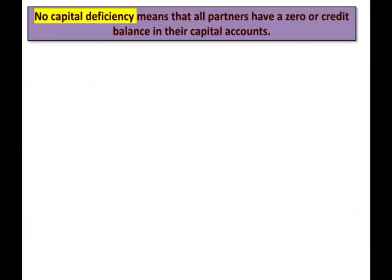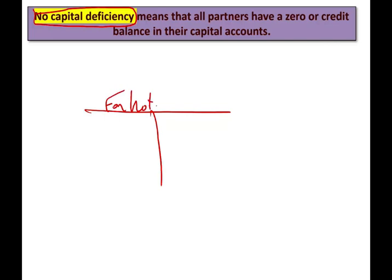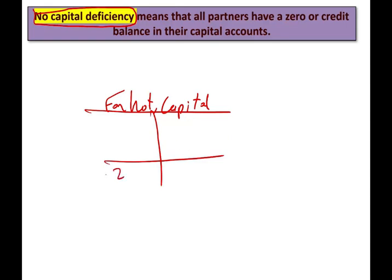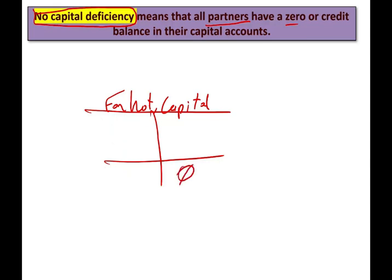Before illustrating anything, we want to define something called 'no capital deficiency.' Let's assume I'm a partner and I have a capital account. As long as I have a credit balance of zero or positive — say $10 — I don't have a capital deficiency. But if I have a debit balance of $2, it means I owe the partnership. Simply put, I took money out more than my capital balance. So the first assumption is there's no capital deficiency — all partners have either a zero or a credit balance.